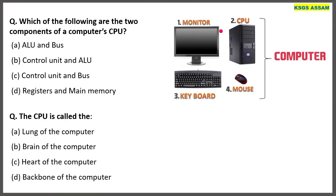A computer has basic parts: monitor, keyboard, mouse, and CPU. The CPU is called the Brain of the Computer.